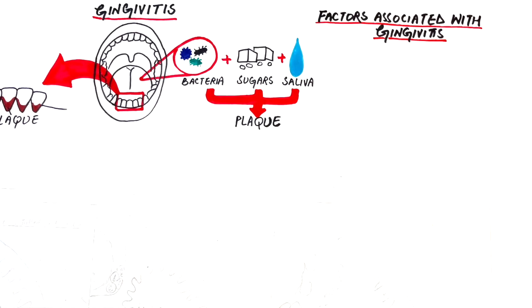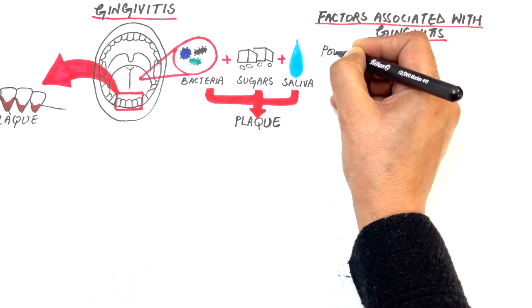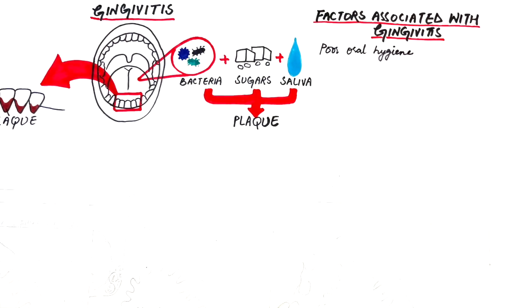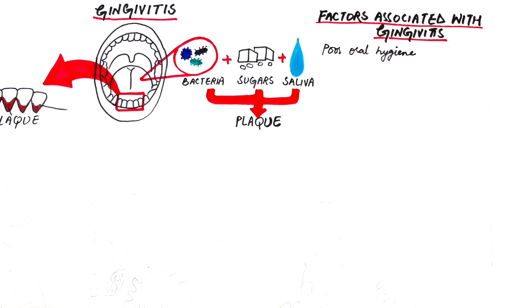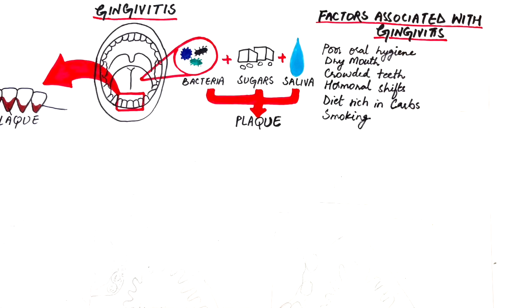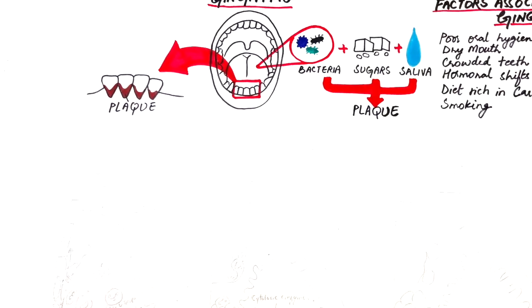Some known factors that can contribute to gum disease are listed as poor oral hygiene, a dry mouth resulting from factors like medication and breathing issues, crowded or crooked teeth, hormonal shifts, and a diet that is rich in carbohydrates and low in vitamins. Smoking may also increase the risk of gum disease.